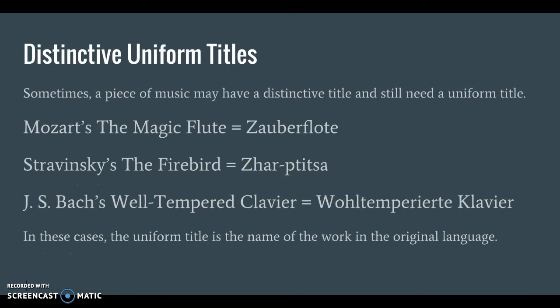It's not uncommon for a work of music to have a distinctive title and still need a uniform title. Take a look at these well-known works. We know them by their translated names — the Magic Flute, the Firebird, and the Well-Tempered Clavier. But Mozart and Bach were German speakers, and Stravinsky was Russian, so they titled their works in their native languages. In cases like these, the uniform title is the name of the work in the original language.